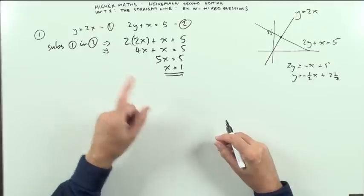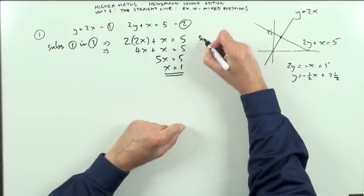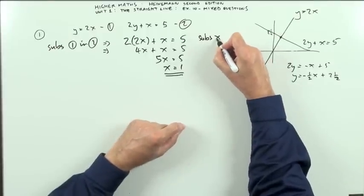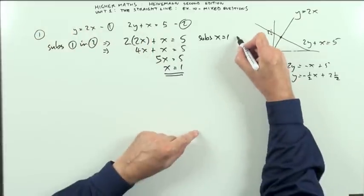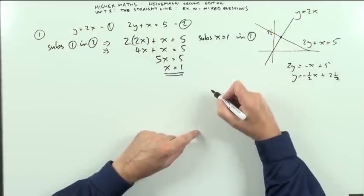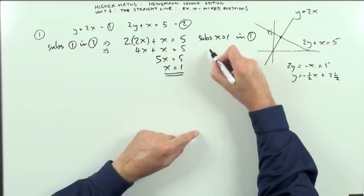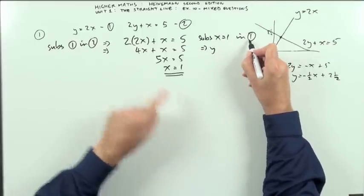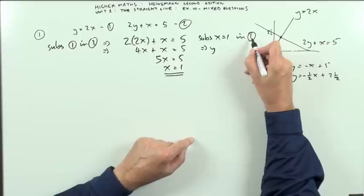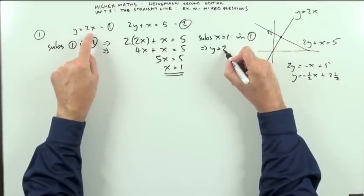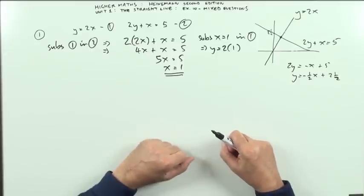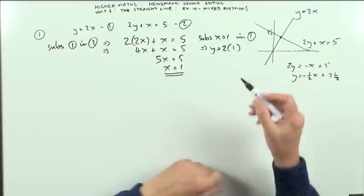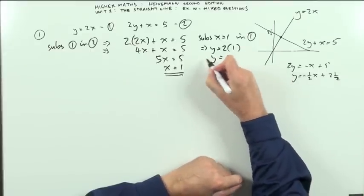Once you know what one of them is then you can find the other one. Substitute x equals 1 into whichever one is more convenient. Obviously this one because it gives you y directly. So substitute that in 1. Which means that reading equation 1 with this substitution inside it, it would be y equals 2 times 1. It's always handy to use brackets as holders for substitutions and expressions and formulae. Which means y equals 2.